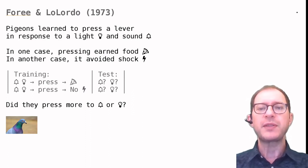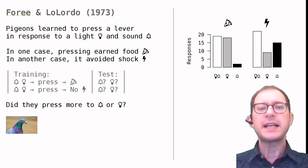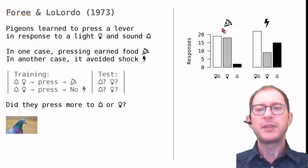The pigeons were then shown the light and the sound separately. Did they press more to one or to the other? Did this vary across conditions? The results are in this graph. When pressing earned food, the pigeons responded much more to the light and almost nothing to the tone.